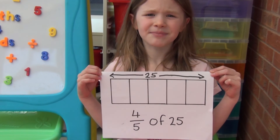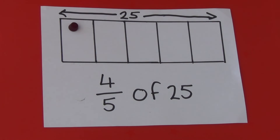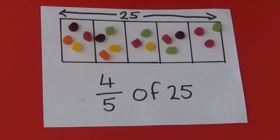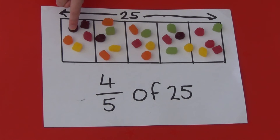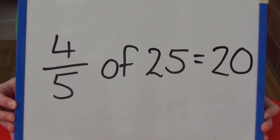We can also show this by using a bar model. The bar represents twenty-five sweets and as I am dividing by five I have split my bar into five sections. Now I need to share my sweets out between the five sections. There are five sweets in each section. So one-fifth is five, and four-fifths are five, ten, fifteen, twenty. So four-fifths of twenty-five equals twenty.